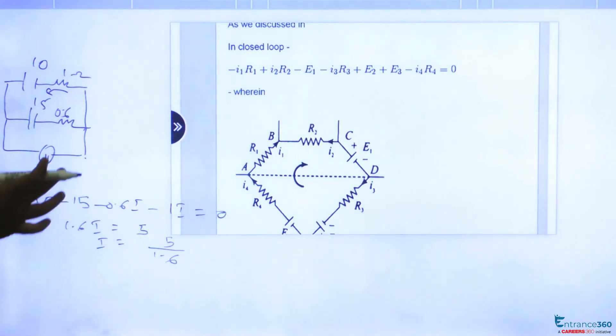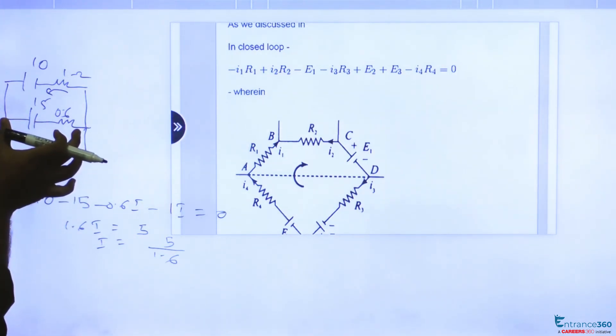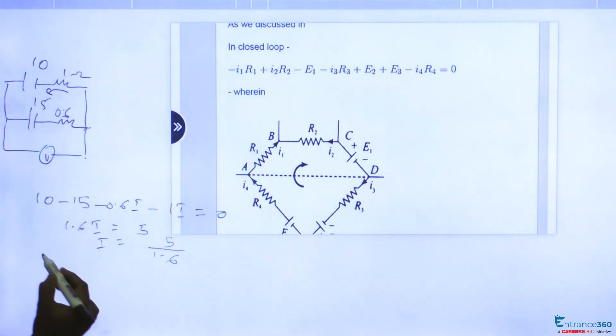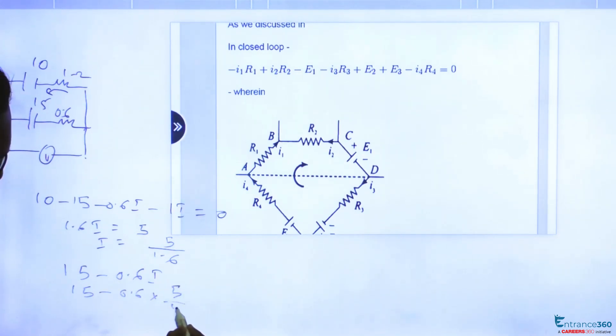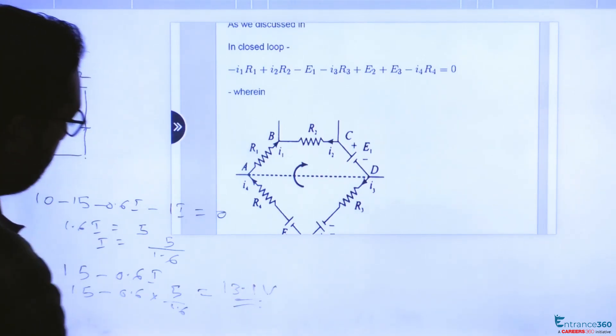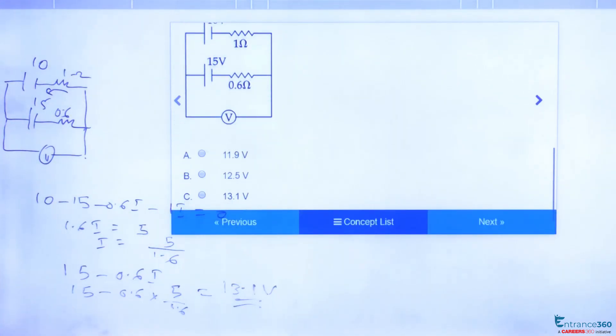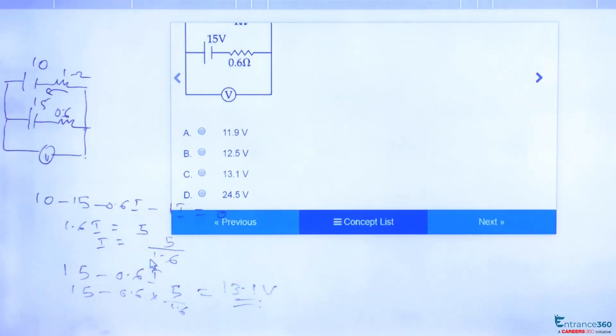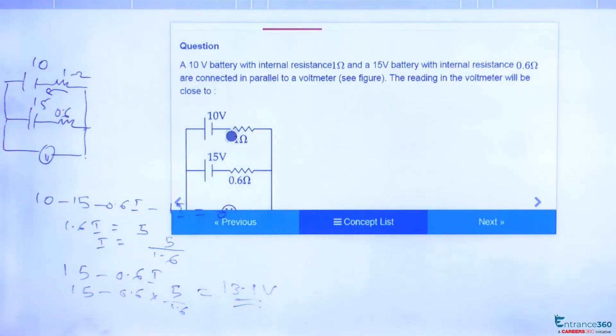The voltage across this voltmeter will be the same as the voltage across this branch. We can calculate this as 15 - 0.6i, which equals 15 - 0.6 × (5/1.6). Upon calculation, you get 13.1V, which is option C. So the correct answer is C.